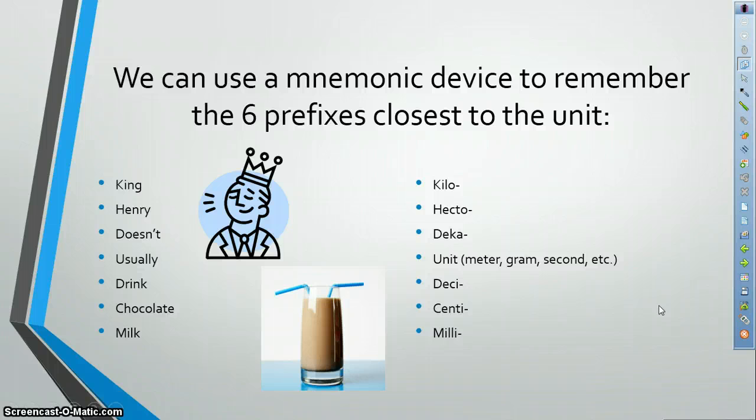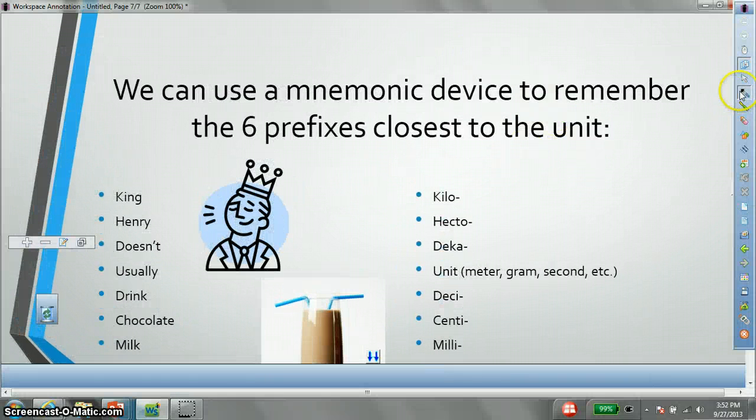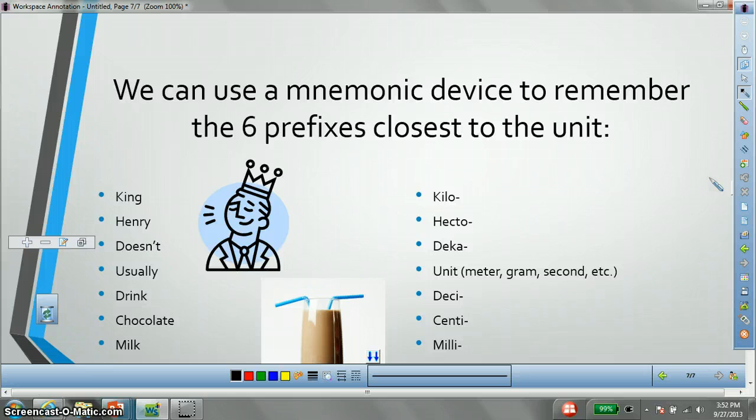There's actually a mnemonic device we can use to remember the six prefixes that are closest, the ones that we're going to deal with the most often. And that is, King Henry doesn't usually drink chocolate milk. Each two letters in our mnemonic device stand for a prefix, except the U in usually, which stands for unit. And remember, a unit can be any unit of measurement, meter, gram, second, etc.